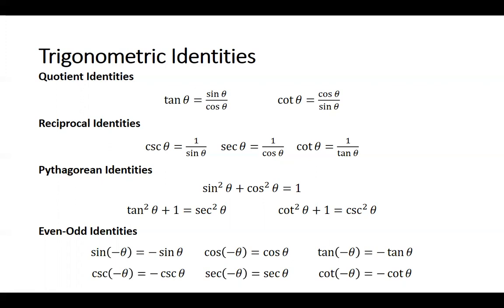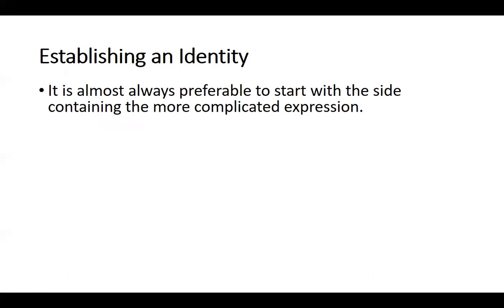So you may ask yourself, why do I need to know all these? What we're going to deal with now is establishing an identity — we're going to prove that something is equal to something else. It is almost always preferable to start with the side containing the more complicated expression. In general, it's easier to start with something complicated and simplify it than to start with something simple and expand it, because there are too many ways to expand something simple.